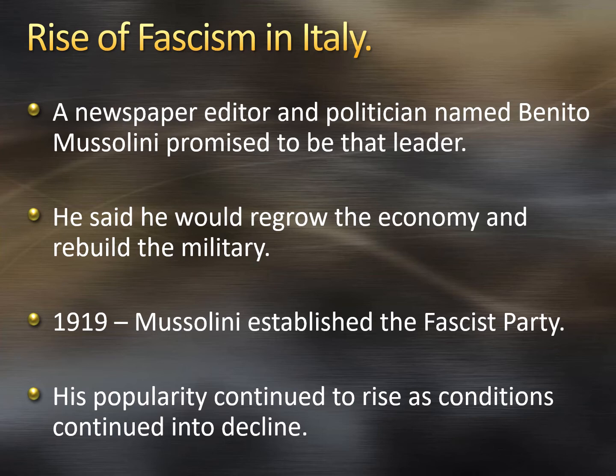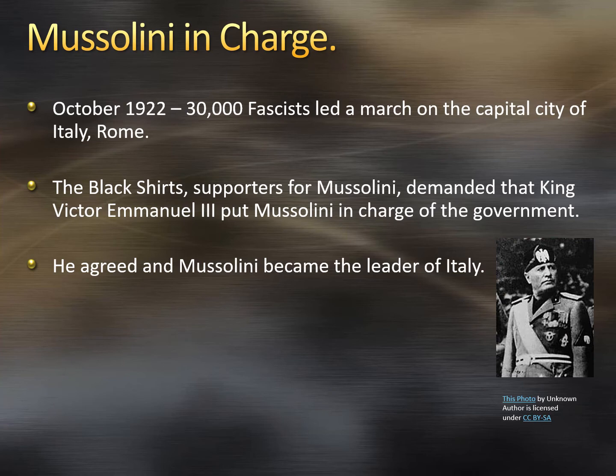A newspaper editor and politician named Benito Mussolini promised to be that leader. He said he would regrow the economy and rebuild the military. In 1919, Mussolini established the fascist party, and his popularity continued to rise as conditions in the country continued to decline. In October 1922, 30,000 fascists led a march on the capital city of Rome. The Black Shirts — supporters of Mussolini who wore black shirts — demanded that King Victor Emmanuel III put Mussolini in charge of the government. Victor Emmanuel agreed, and Mussolini became the leader of Italy.